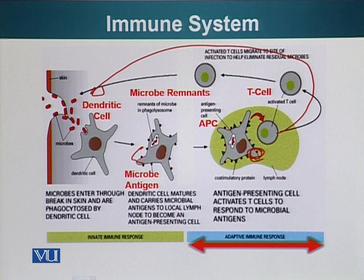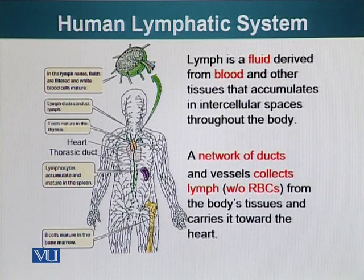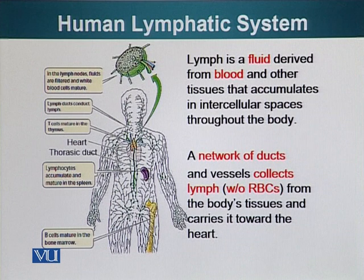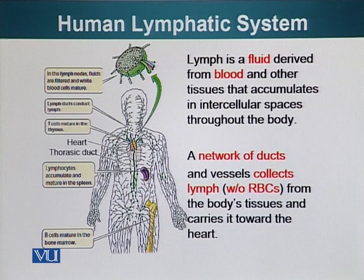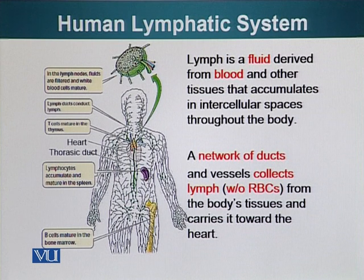I have talked about the adaptive immune system and about lymph. Let me tell you more about lymph. Here's a diagram of the lymphatic system. We have another type of vessels in our body which carry lymph — a clear fluid. Lymph is derived from blood and it accumulates in the intercellular spaces. From these spaces, lymph is collected through a network of ducts and the lymphatic fluid is then returned to the blood at a special blood vessel called the thoracic duct.